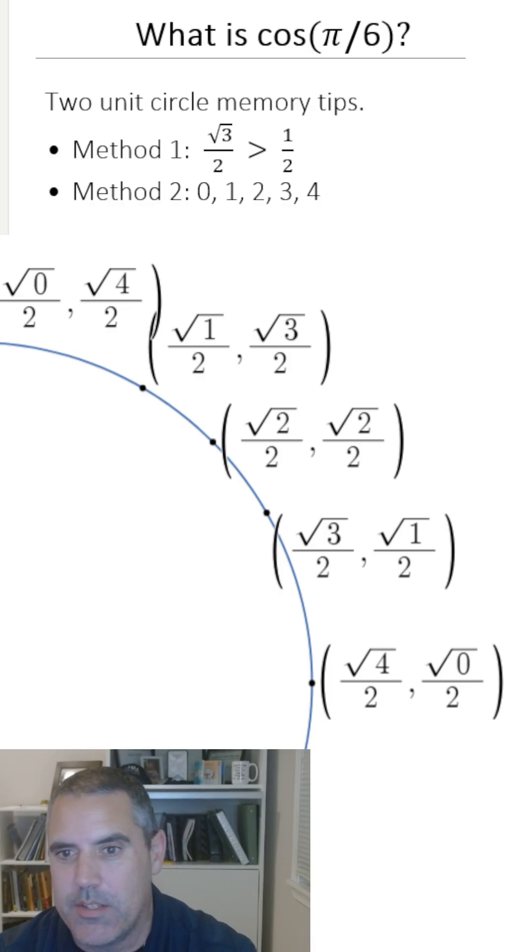So there you go. If that resonates with you, there's our values. You do have to remember that the square root of 0 is 0. And so the square root of 0 over 2 is actually just 0. And the square root of 4 over 2 is actually just 1. All right, let me know if that helps you.